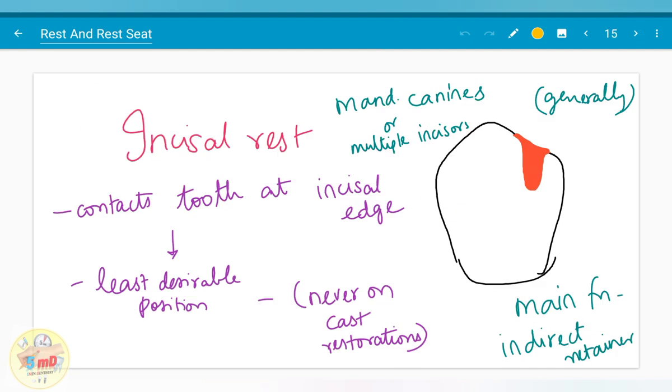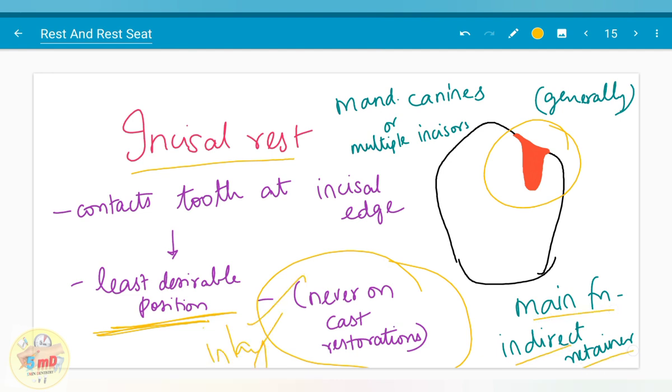Moving on to the next type of rest, the incisal rest. It contacts the tooth at the incisal edge. It is the rigid part of the RPD that contacts the tooth at the incisal edge, therefore the name incisal rest. It is the least desirable position. As you see, it is half-exposed on the facial surface. It is never recommended on cast restorations. Here, the main function of the incisal rest is indirect retention.